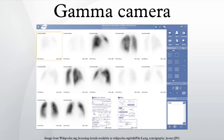Hal Anger developed the first gamma camera in 1957. His original design, frequently called the Anger camera, is still widely used today.